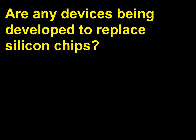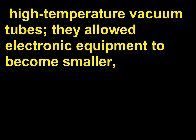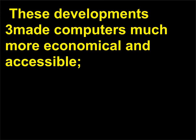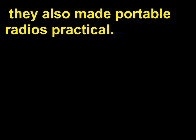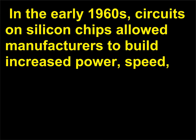Are any devices being developed to replace silicon chips? When transistors were introduced in 1948, they demanded less power than fragile high-temperature vacuum tubes, allowed electronic equipment to become smaller, faster, and more dependable, and generated less heat. These developments made computers much more economical and accessible. They also made portable radios practical. However, the smaller components were harder to wire together, and hand wiring was both expensive and error-prone. In the early 1960s, circuits on silicon chips allowed manufacturers to build increased power, speed, and memory storage into smaller packages.